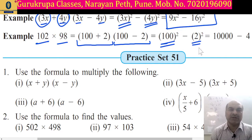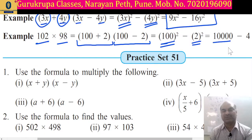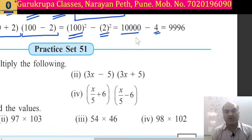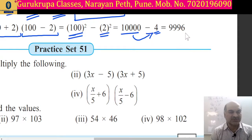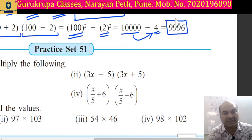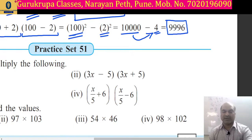Square of 100 is 10,000, and square of 2 is 4. So 10,000 minus 4 equals 9,996. This is our answer. We have found the answer of the product of two numbers by using the expansion formula.